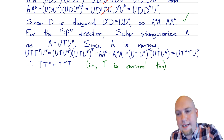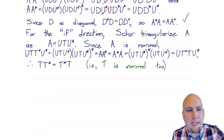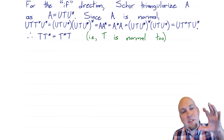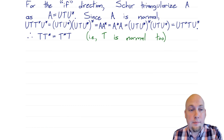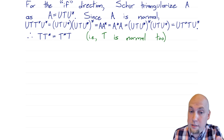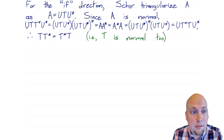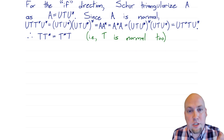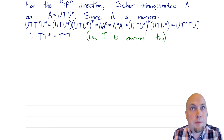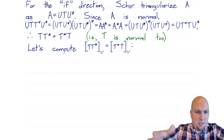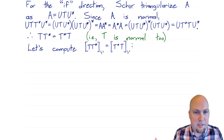So T has to be normal as well. Where does that get us? It turns out that every upper triangular matrix that is also normal must in fact be diagonal — and that's exactly what we want to show. So how do we convince ourselves of that? How do we show that a normal upper triangular matrix must be diagonal? Let's just write it out in terms of matrix entries — a big matrix calculation.